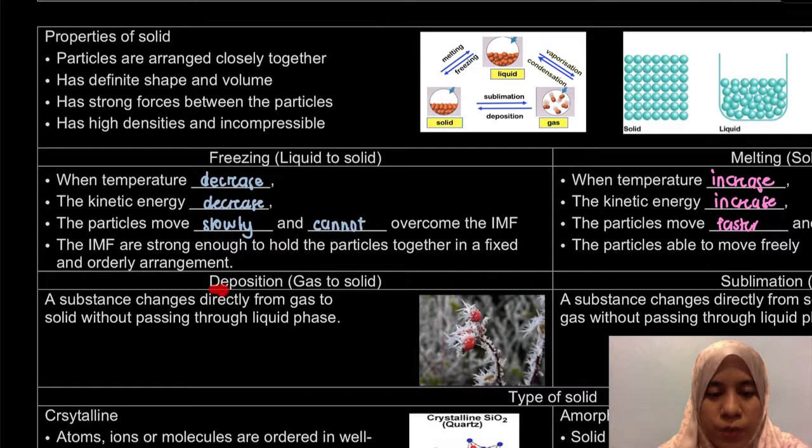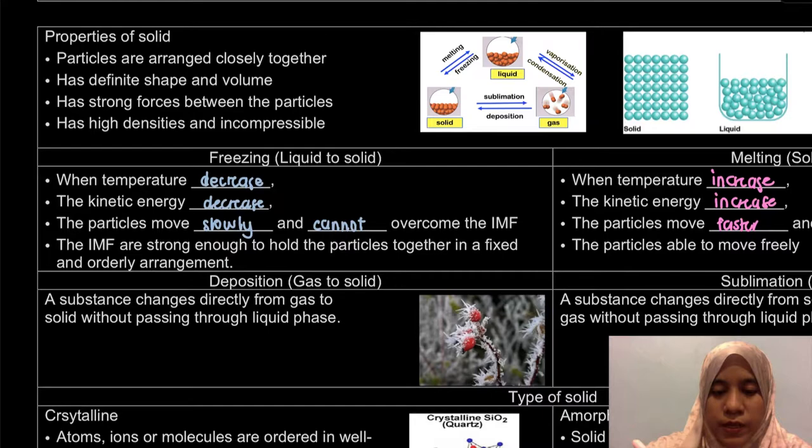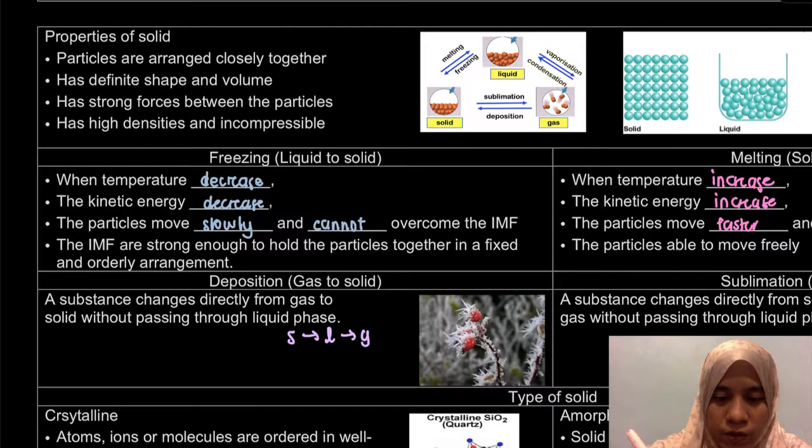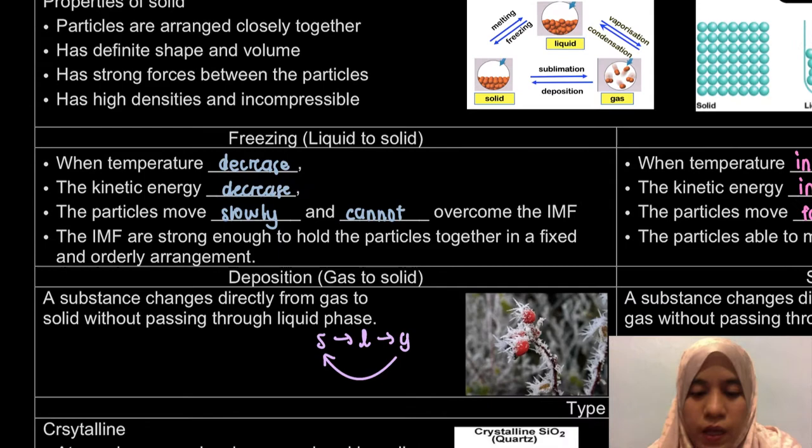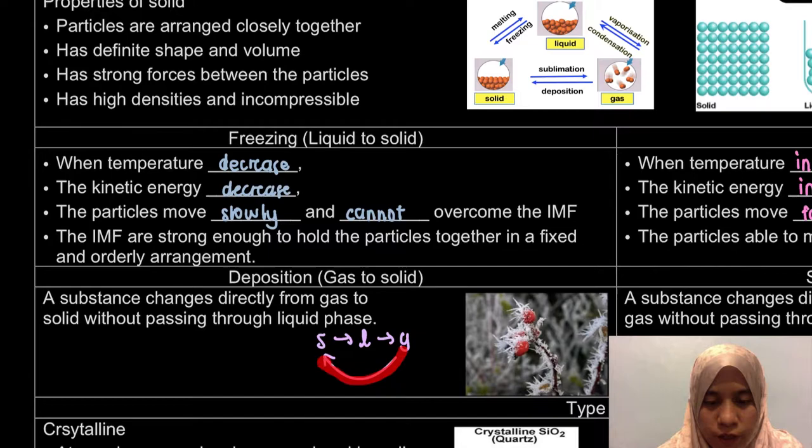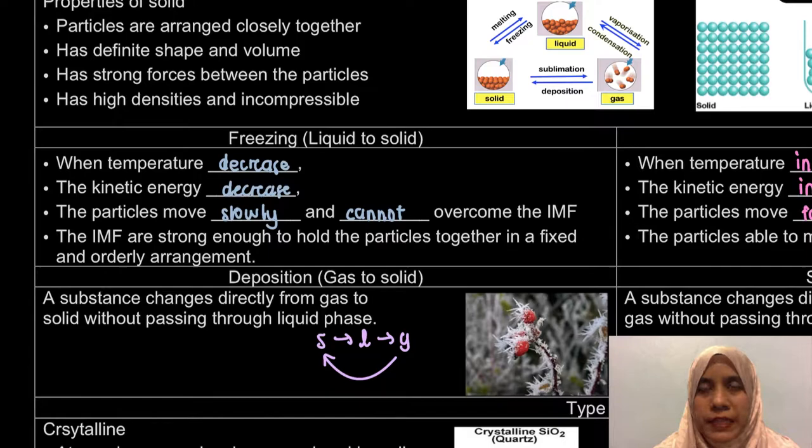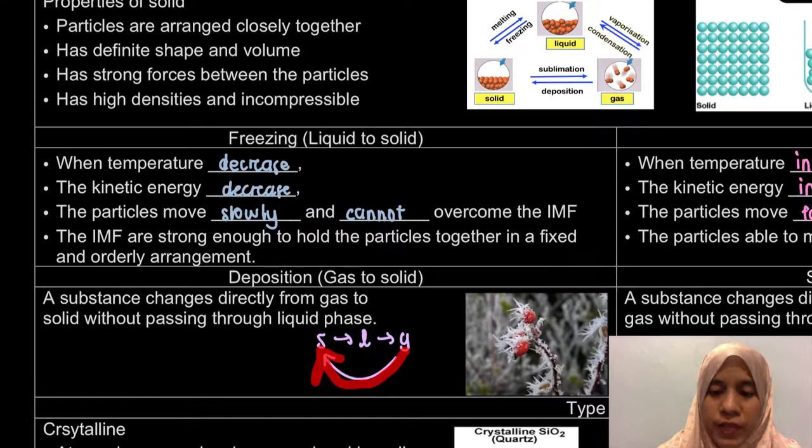Next we're going to look at the case of solid to gas. The process is deposition, where gas changes to solid. A substance changes directly from gas to solid without passing through liquid phase. Usually we learn that it will become solid, solid becomes liquid, liquid becomes gas. But deposition is from gas to solid. An example of deposition is the formation of frost. Our water vapor will change straight away to solid. Again, deposition is actually a process from gas to solid. For example, the formation of frost. Usually in Malaysia we don't have this. What happens is, it's very cold. Our water vapor won't change into liquid. It won't become water, but it will directly become solid, which is our frost.